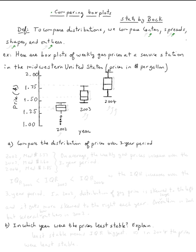So let's do this example. Here are box plots of weekly gas prices at a service station in the Midwestern United States. The prices are in dollars per gallon. The distribution in 2002 is right there, the one in 2003, the one in 2004 of the prices.